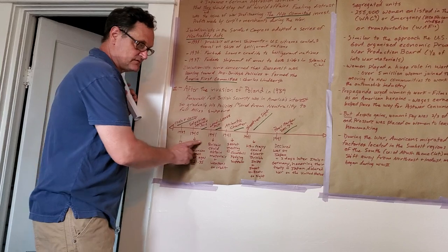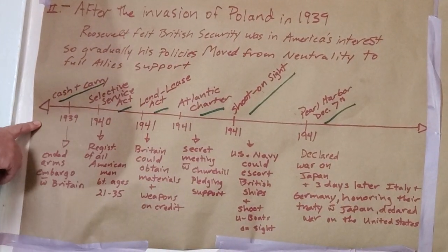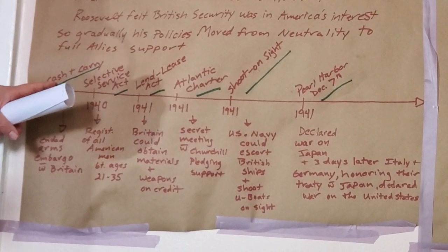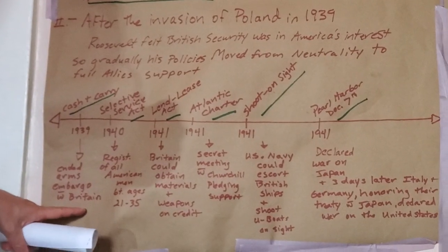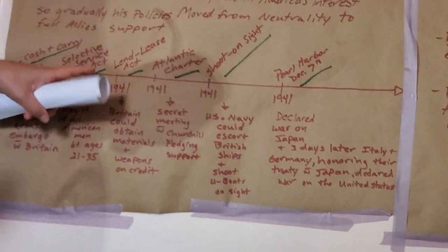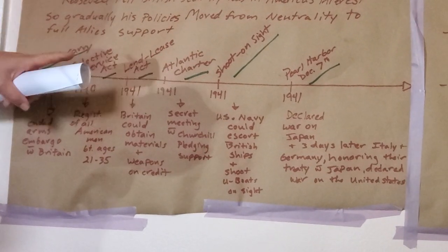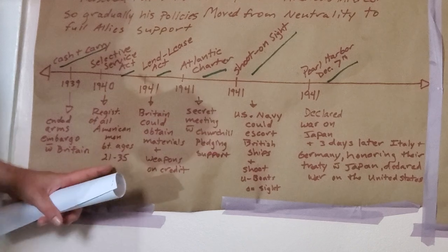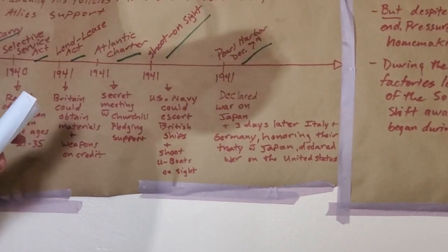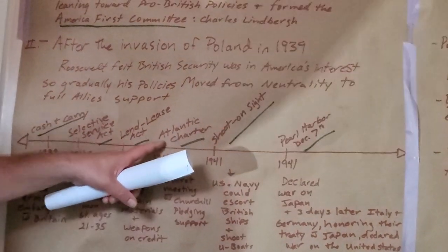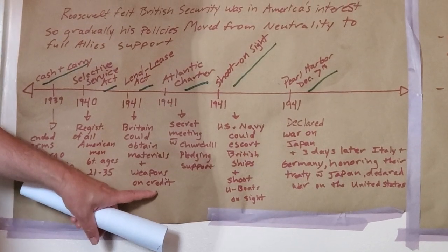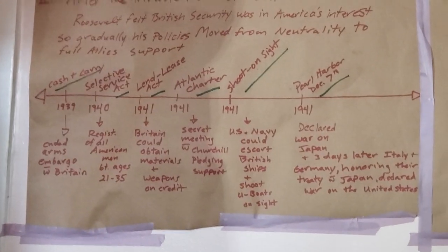There's a little timeline of how neutrality unraveled. In 1939, Congress instituted cash and carry, which ended the arms embargo with Britain and basically nullified the Neutrality Act of 1935. In 1940, they initiated the draft — the Selective Service Act — registering all American men between the ages of 21 and 35; about 2.1 million people were drafted just in the first year. Then you have the famous Lend-Lease Act in 1941, where Britain could obtain materials and weapons on credit, which essentially nullified the Neutrality Act of 1936.